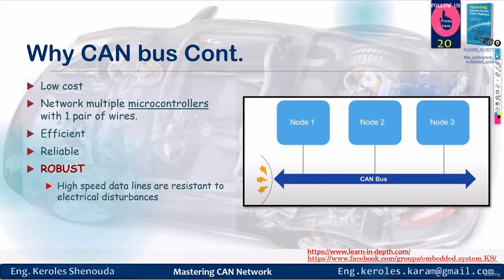The CAN is robust, which means it's strong. It suggests that it can resist electrical disturbances or withstand electromagnetic interference. If you have noise entering the bus, the bus resists this noise.